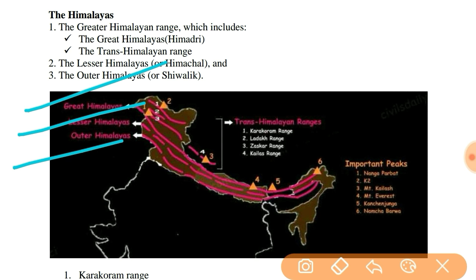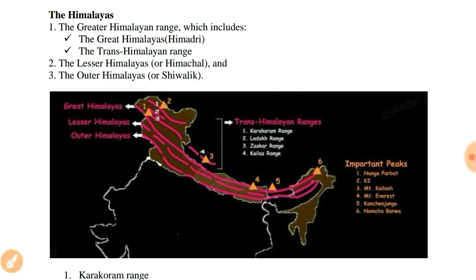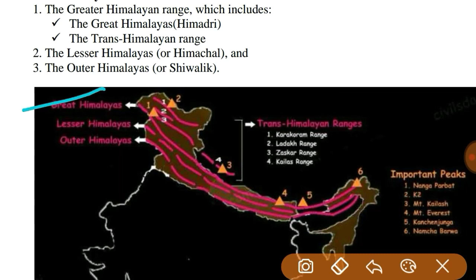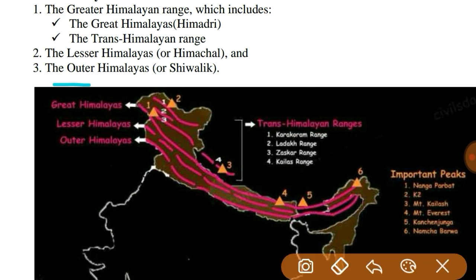These Himalayan ranges have a length of 2400 kilometers from west end to east end. Their width is more in Kashmir and less towards Arunachal Pradesh. The Great Himalayas or Himadri is the northernmost range. The Lesser Himalayas or Himachal is to the south of Himadri. The Outer Himalayas or Shivaliks are to the south of Himachal.